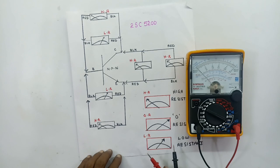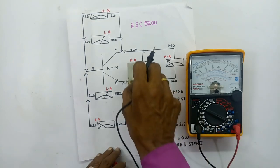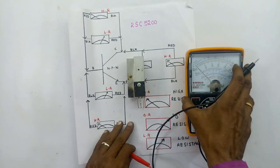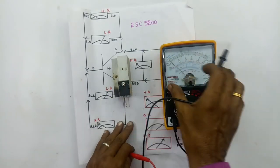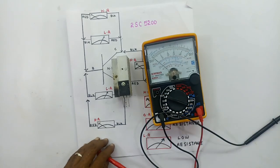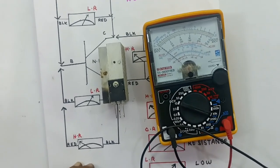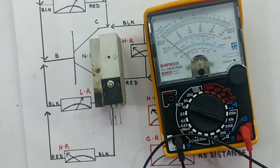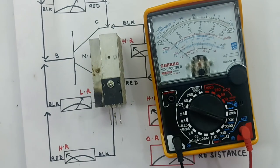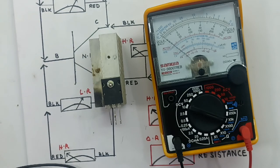You can check it out on the board or on the table — this is a transistor. Now we can check it. Select the 1K range on the multimeter.